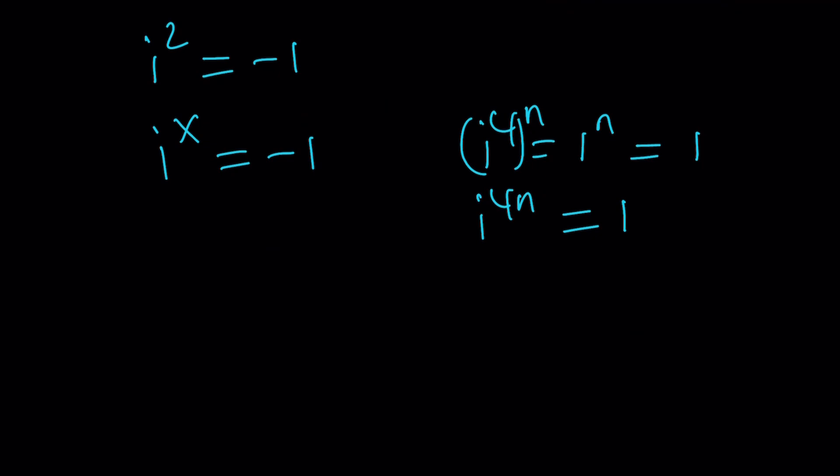I can go ahead and multiply i to the x by i to the power of 4n. And that's going to give me basically the same thing. Or I can do it as follows. Write the i to the x, and then write the negative 1 as i squared and multiply it by i to the power of 4n. Because this is 1, this is still going to be true. And then it's going to give us i to the power of 4n plus 2. Therefore, this is going to be the right answer.